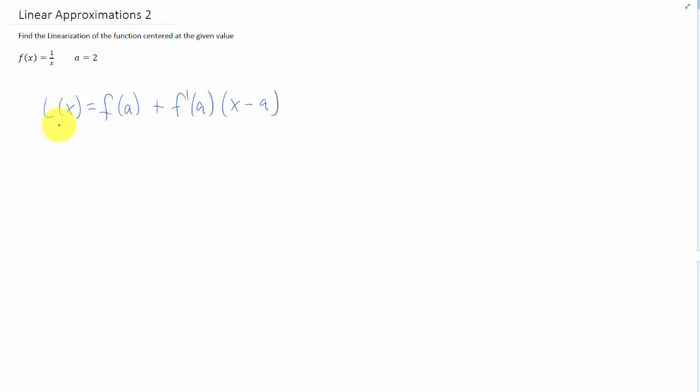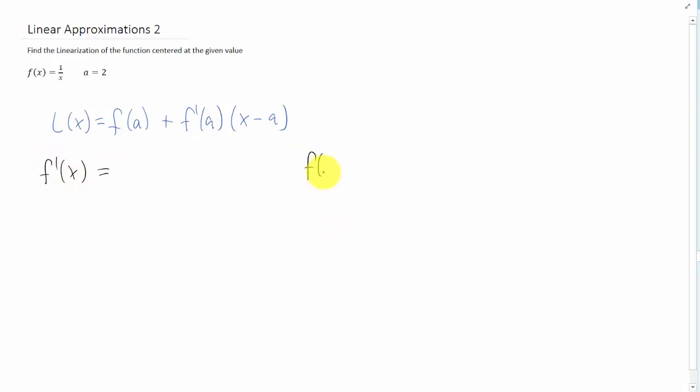Again, our formula for linearization is just the equation of a tangent line. So why don't we start by finding a derivative, and that'll give us the slope of our tangent line. Now, recall that the function that we're given here of 1 over x can be written in a slightly more convenient form for taking derivatives. 1 over x can be written in the form x to the negative first power.